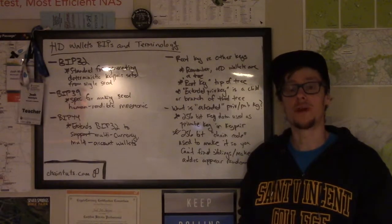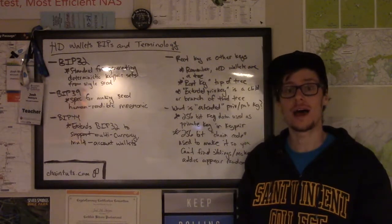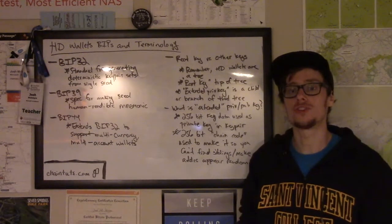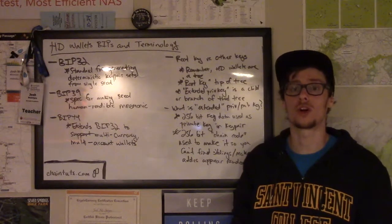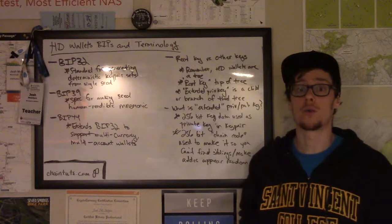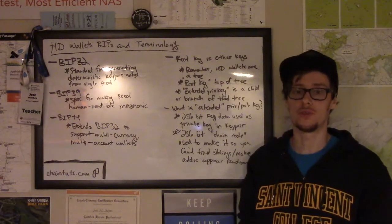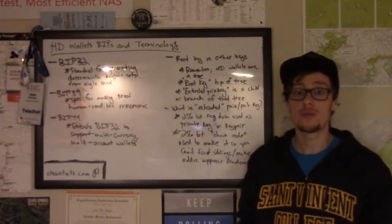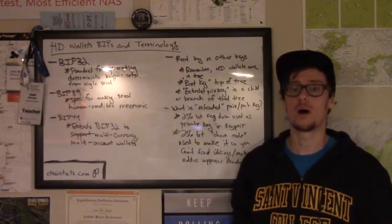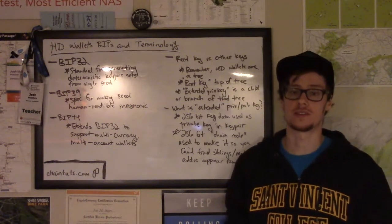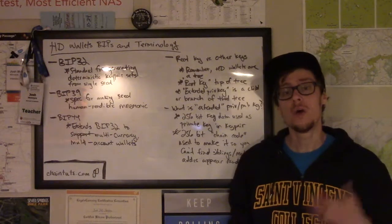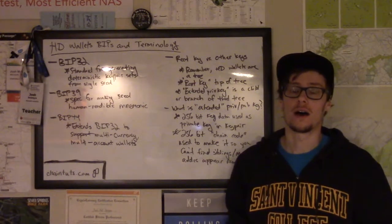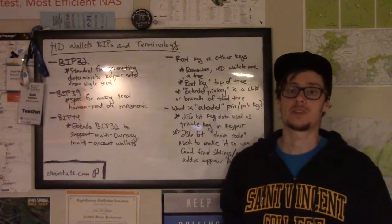Hey everyone, this is Josh with another Bitcoin and blockchain tutorial available at ChainTuts.com. Today we're going to be talking about some terminology around HD or hierarchical deterministic wallets. This is the modern wallet standard that most people are used to using — the type of wallet where you have a 12 to 24 word English backup phrase that generates all of your addresses and private keys in a predictable pattern, meaning you only have to use this one backup.